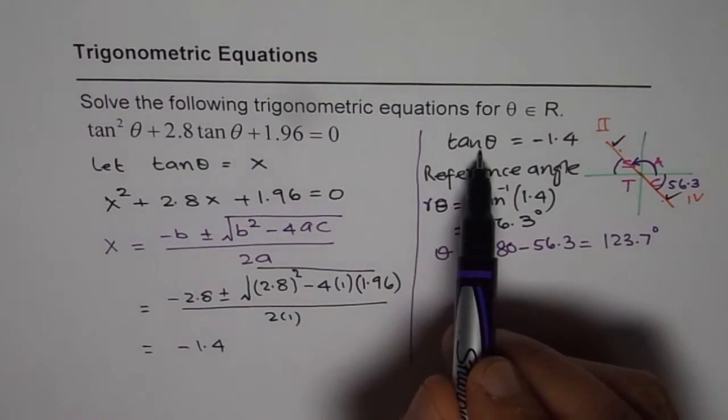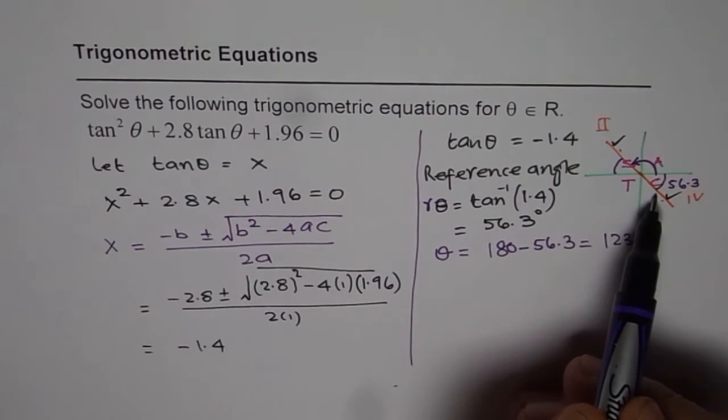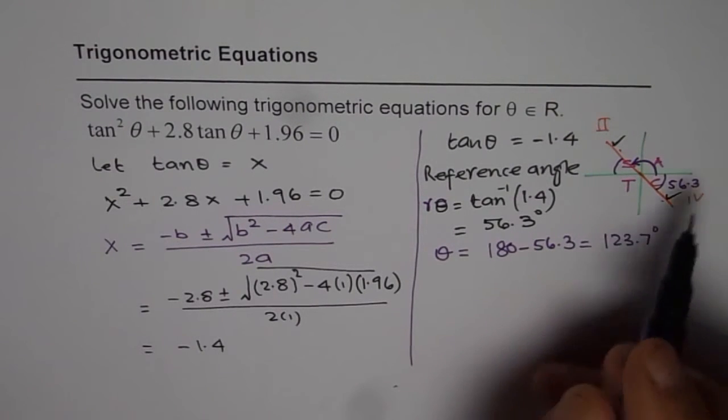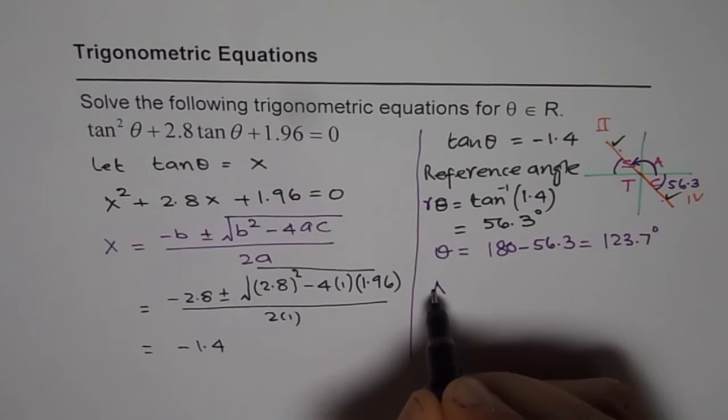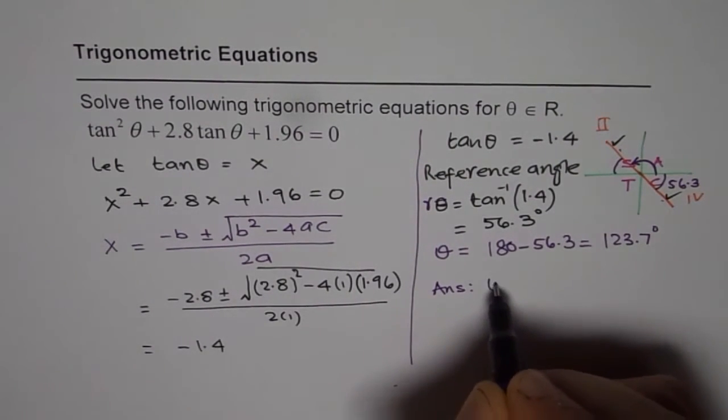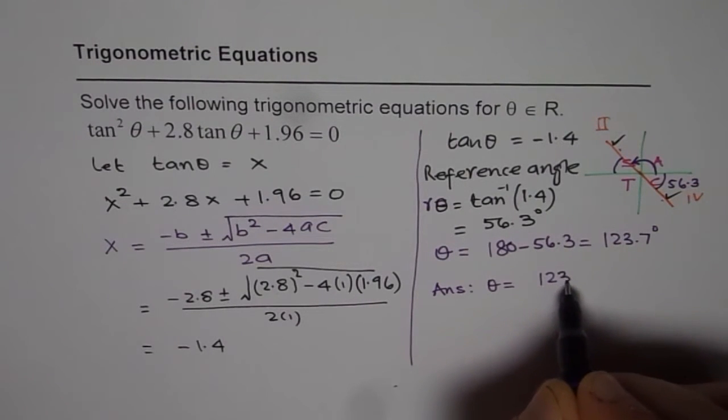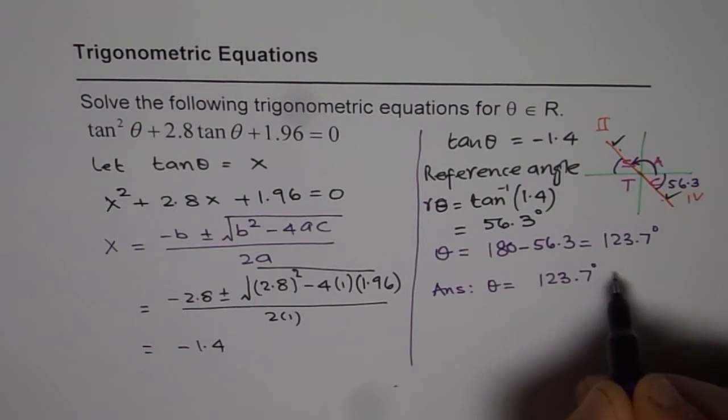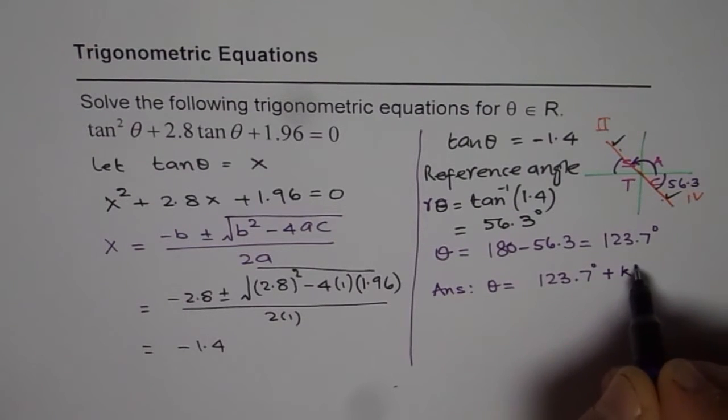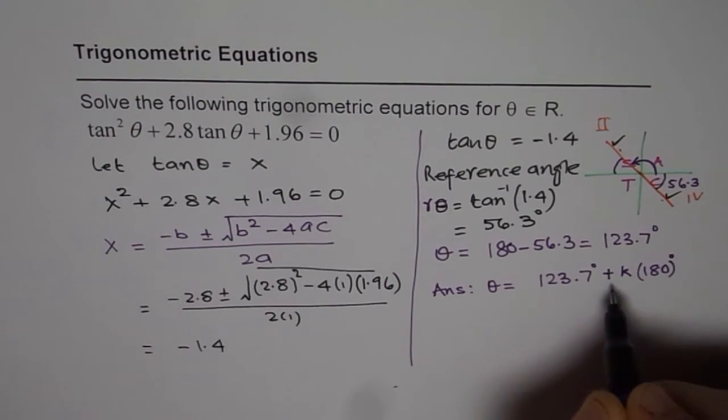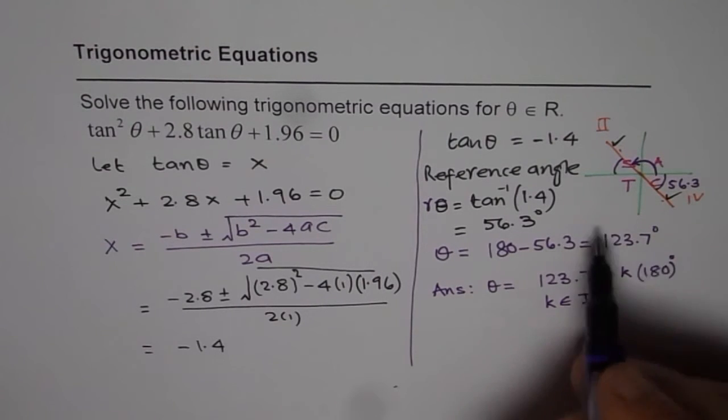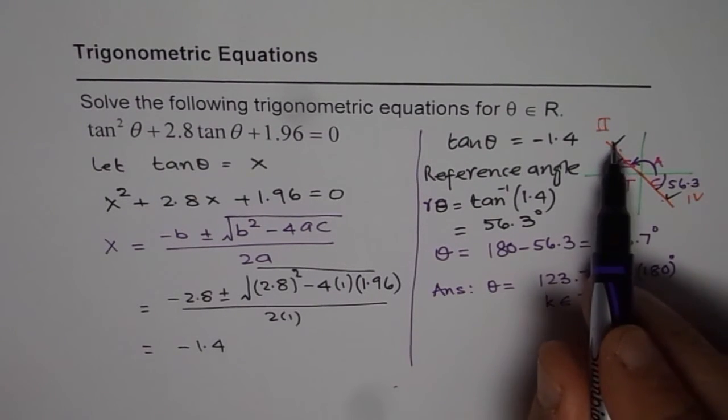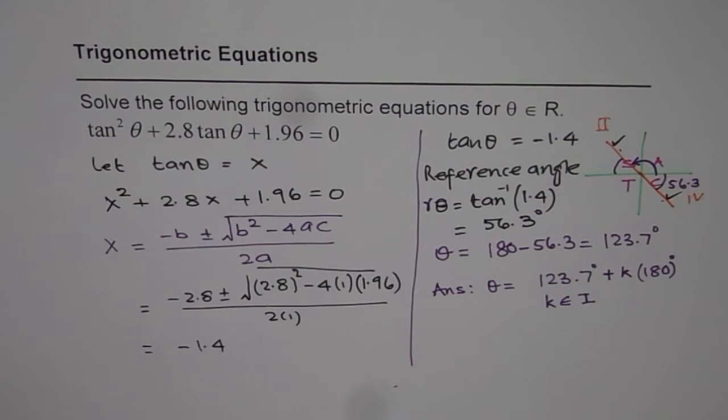Now we know for tan time period is pi or 180 degrees. Therefore when theta belongs to real numbers the answer should be theta equals to 123.7 degrees plus k times 180 degrees where k belongs to integers. This gives you all values. So all values will be in quadrant 2 and 4 and we can get all our answers.